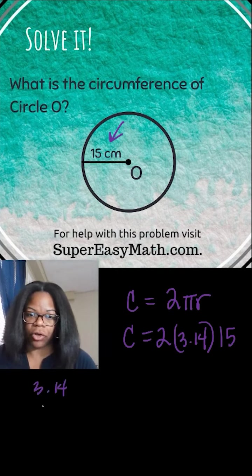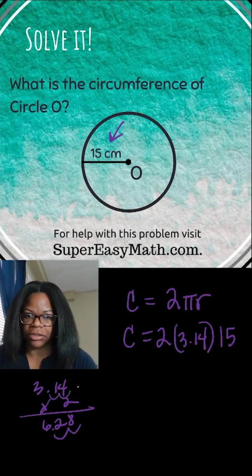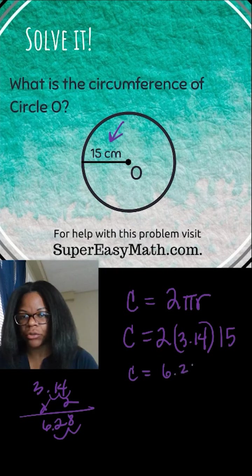I'm going to come over to the side of my paper or wherever I'm working and multiply that, and I get 6.28, and my decimal would go right here because it went over two spaces. So that is C equals 6.28 times 15.